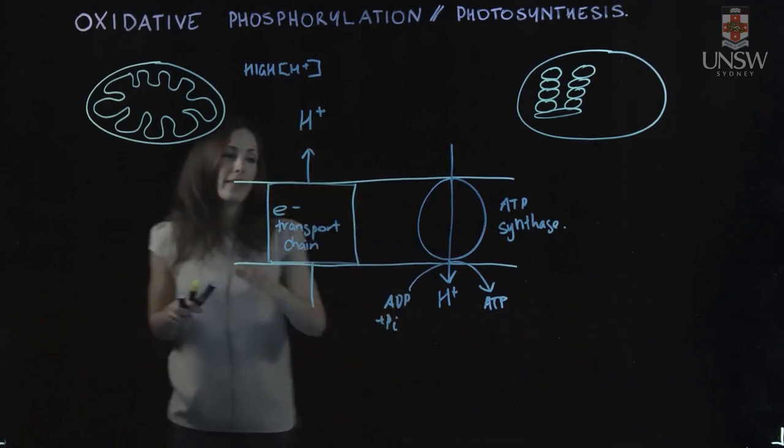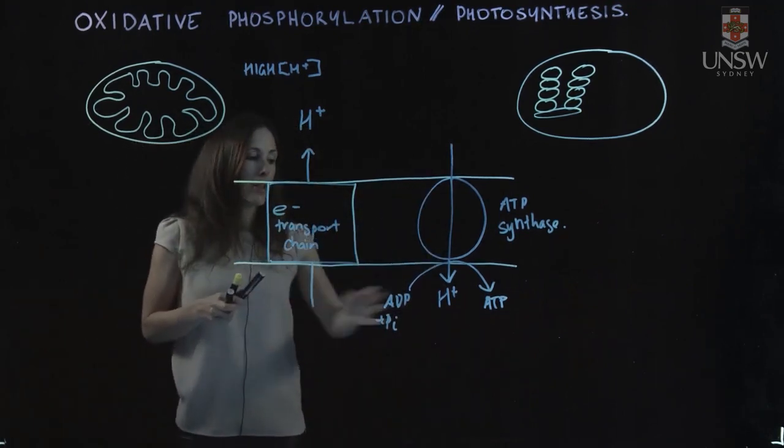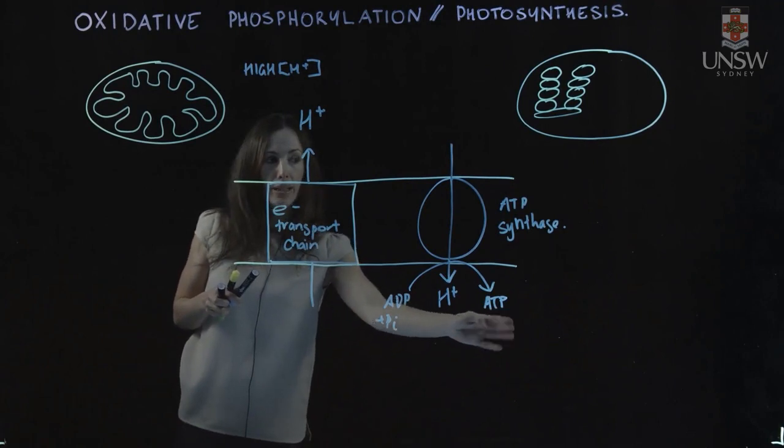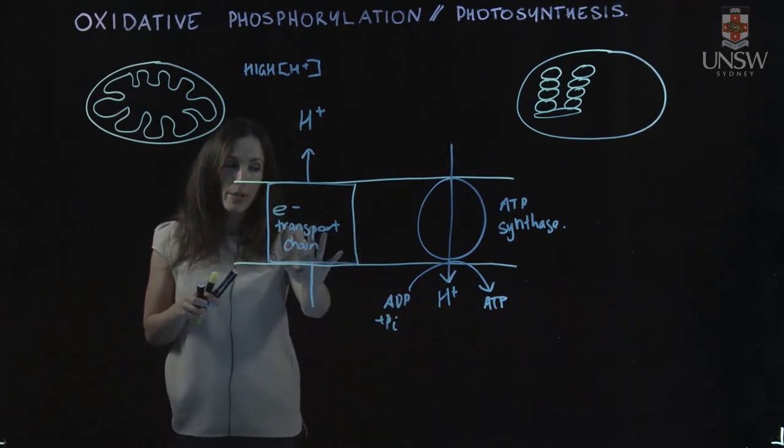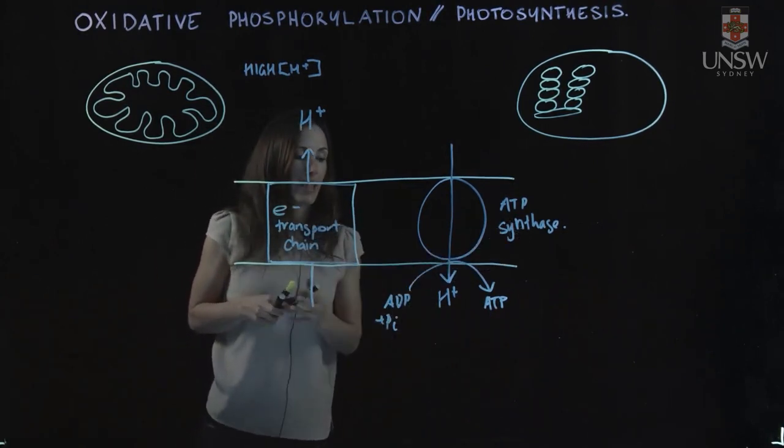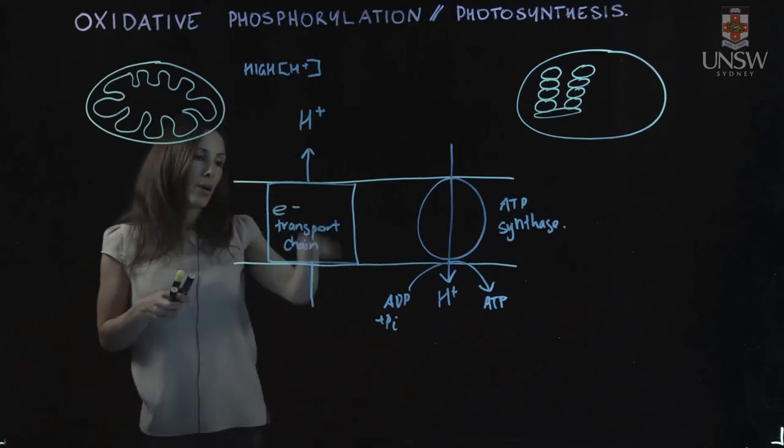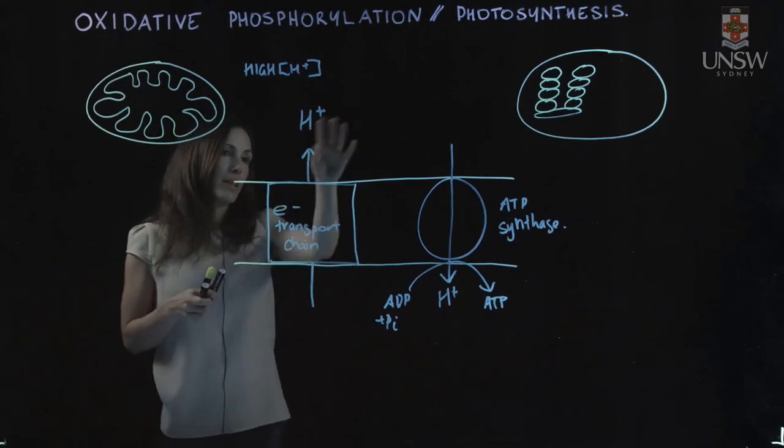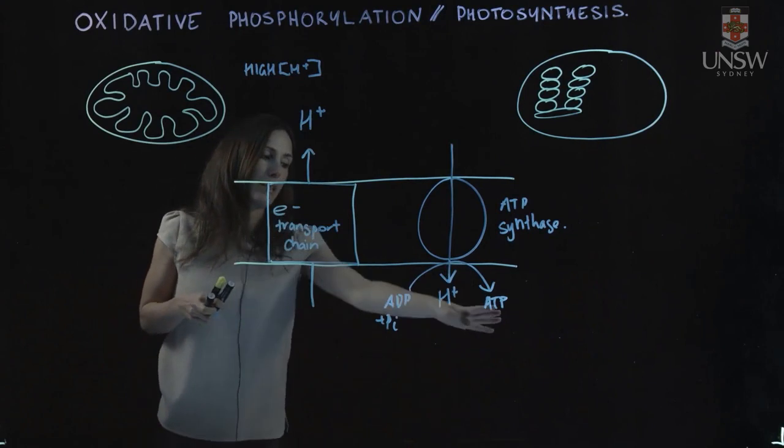So those are the things that these have in common. They generate ATP, these organelles, they have an electron transport chain, they have an ATP synthase, and there's this proton gradient that is what is created and harnessed to create ATP.